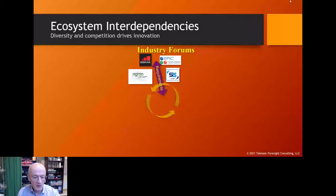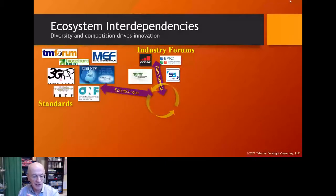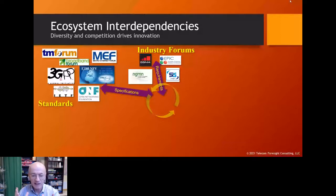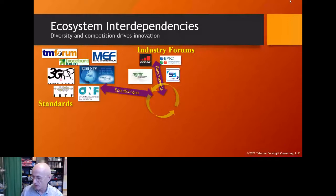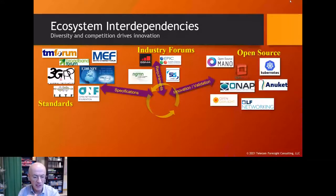After industry forums align on requirements, they go to standards bodies to do specification work. For 5G, much specification work is done in 3GPP; for broadband in the Broadband Forum; for Ethernet in the Metro Ethernet Forum and IEEE. When it comes to implementation, open source accelerates progress — communities make quick advances on code and enable innovation, and that's where Kubernetes fits in.